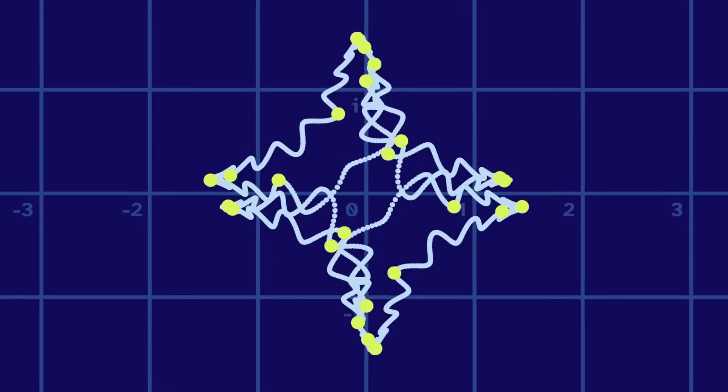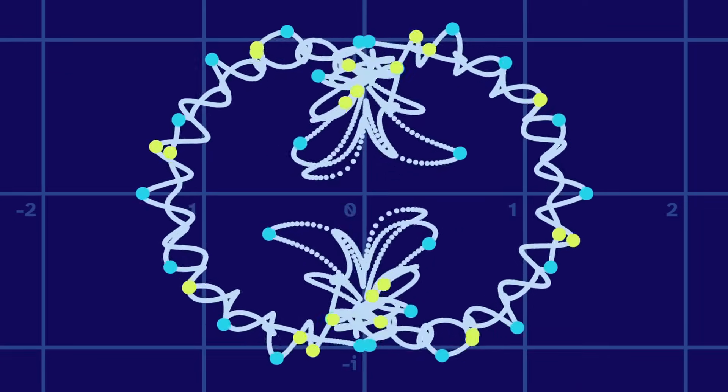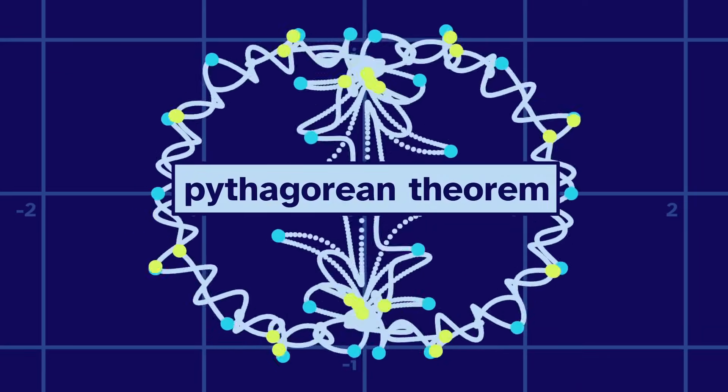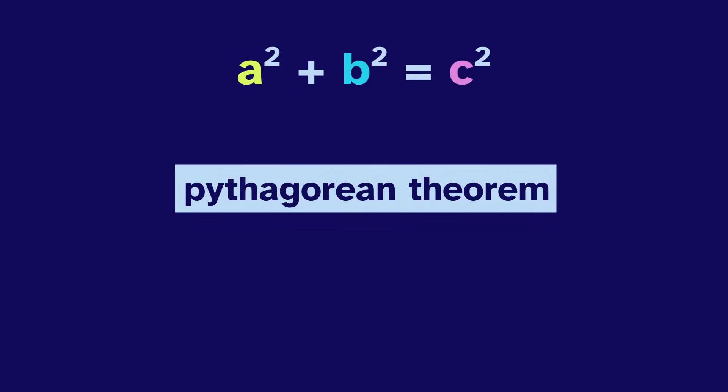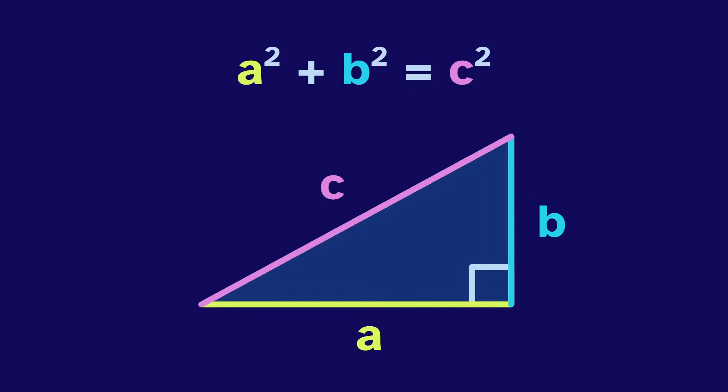These crazy shapes show up if we mess around with the Pythagorean theorem. A squared plus B squared equals C squared. It tells us the relationship between the sides of a triangle.